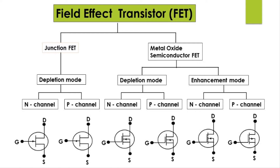A unipolar device is a device which depends only on the conduction of any one type of charge carrier, that is either electrons or holes. That is why it is called a unipolar device. FET is also a voltage-controlled device, meaning it does not need a biasing current to operate.